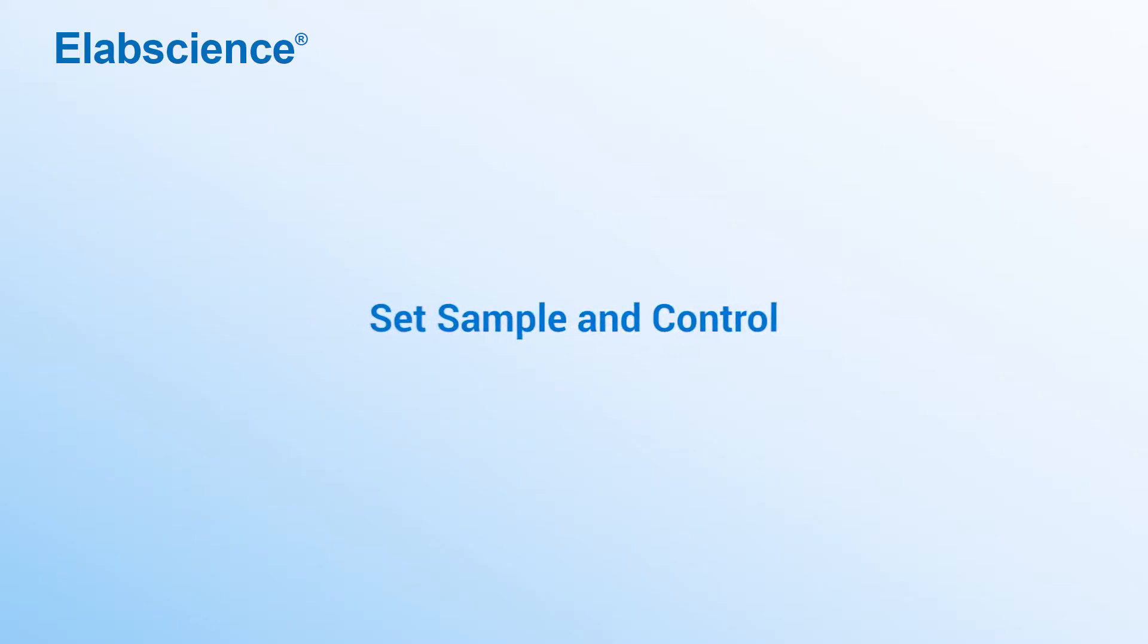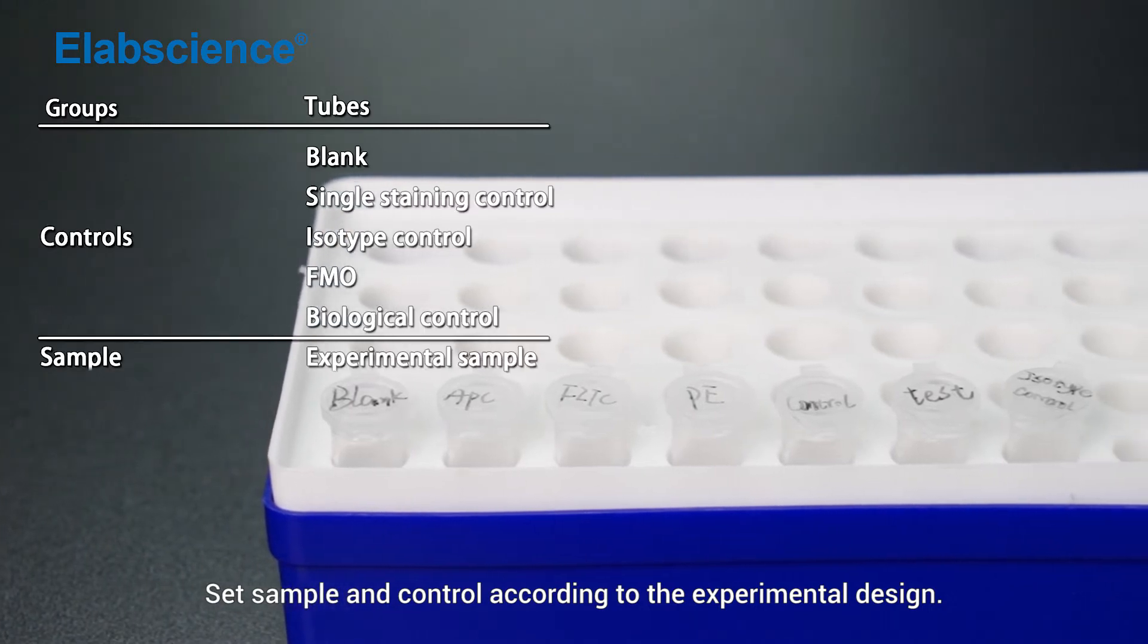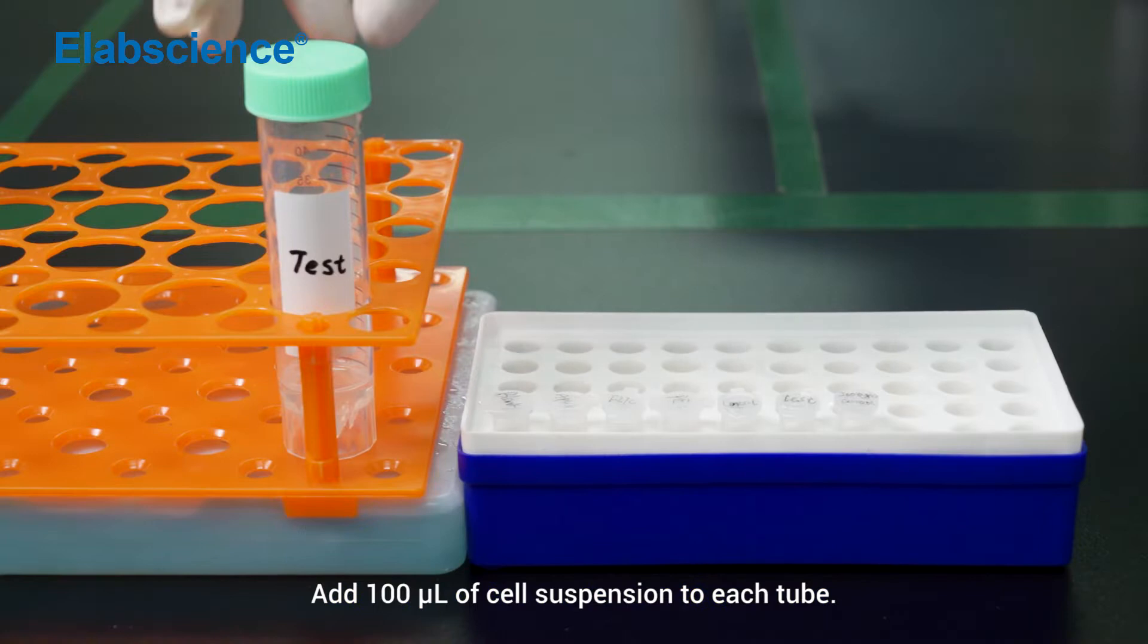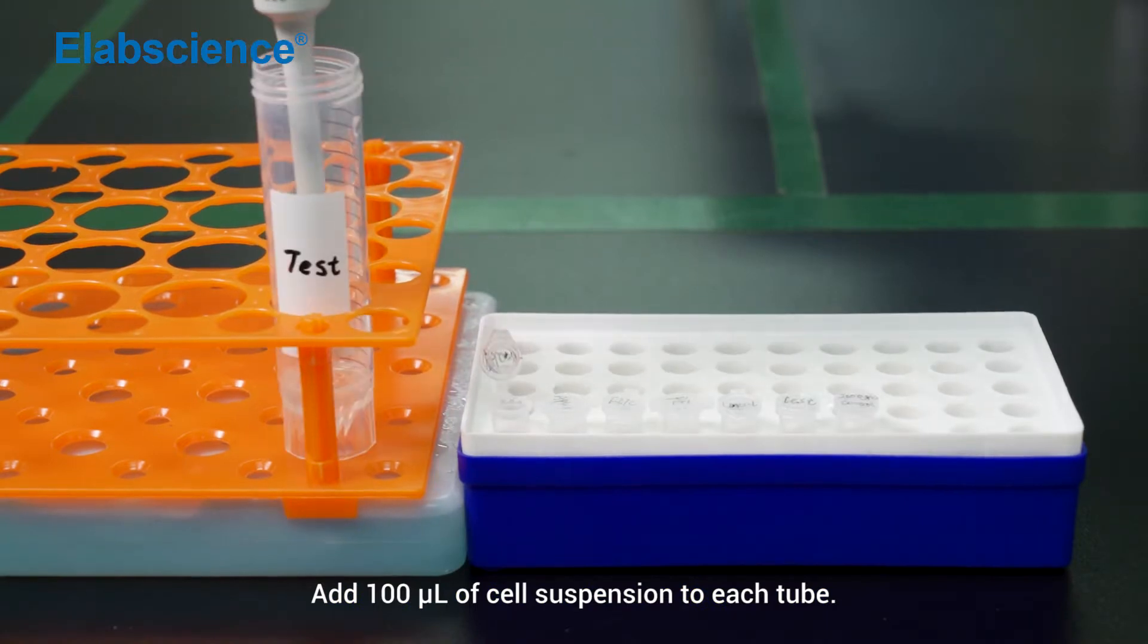Set sample and control. Set sample and control according to the experimental design. Add 100 µL of cell suspension to each tube.